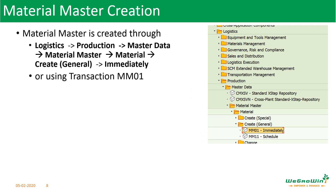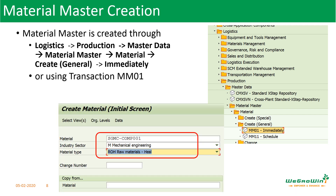Now let us discuss how to create the material master in SAP. To create the material master, the menu path shown here is used, or the transaction MM01. Here, first enter the material code, and it is assigned to the industry sector and material type. Industry sector determines the screen sequence and field selection in material master, and defines which fields to hide or open, which fields are mandatory, and which are optional. Please note that a material is assigned to an industry sector and it cannot be changed, so it has to be carefully assigned.